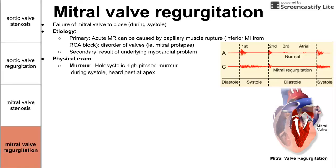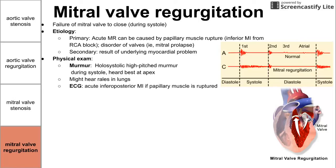On physical exam, we hear a holosystolic high-pitched murmur — holosystolic meaning it's the same intensity throughout all of systole. It's heard best at the apex. You might hear rales in the lungs corresponding to pulmonary edema. The ECG shows acute inferior posterior myocardial infarction if the papillary muscle is ruptured, showing MI on inferior leads — could be a STEMI if the papillary muscle is the cause.